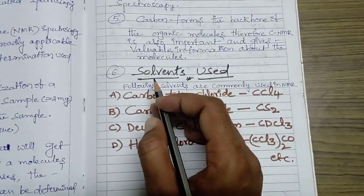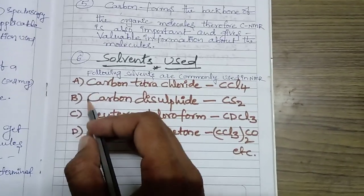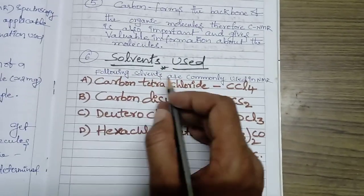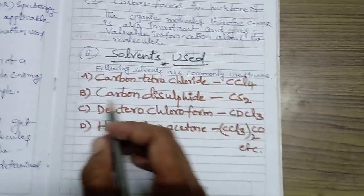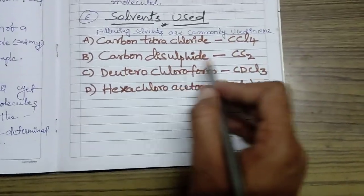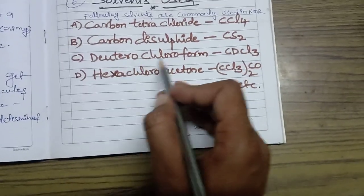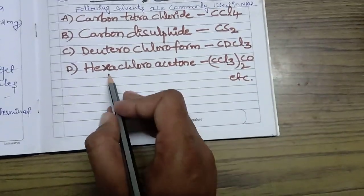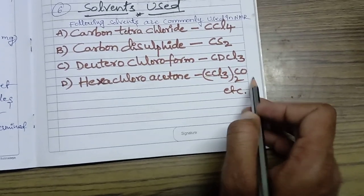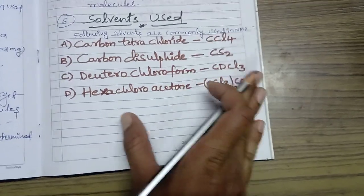I want to introduce today solvents used in NMR spectroscopy. Research students will use different variation solvents. The mostly usable solvents are commonly used in NMR spectroscopy: carbon tetrachloride CCl4, carbon disulfide CS2, deutero chloroform CDCl3, and hexachloroacetone CCl3-CO-CCl3.